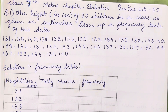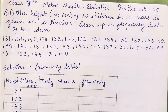Hello everyone, welcome back to my channel. Today we will be studying Class 7 Math, Chapter 15, Statistics, Practice Set number 55, which we are going to complete in today's video. This is going to be very easy — we have to make tally marks and write the frequency, which means we have to count and add the given numbers. So it is going to be very interesting.